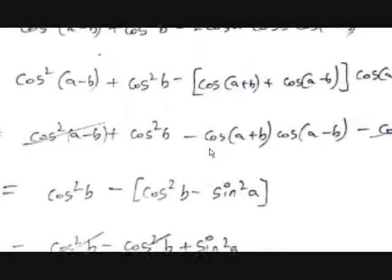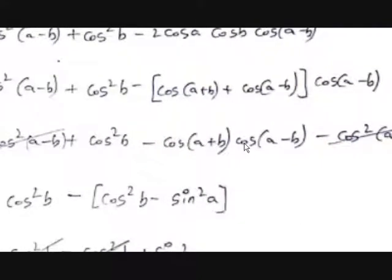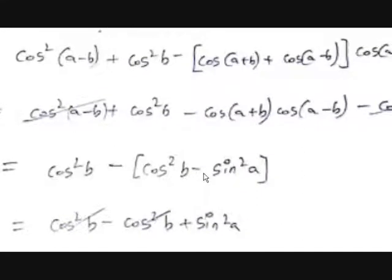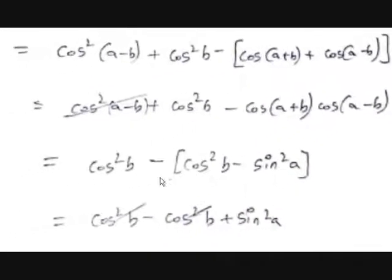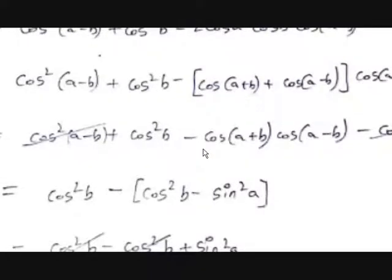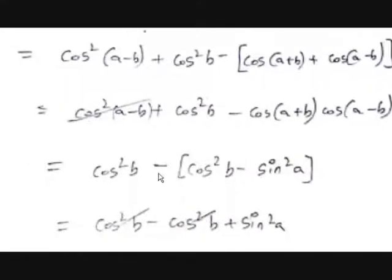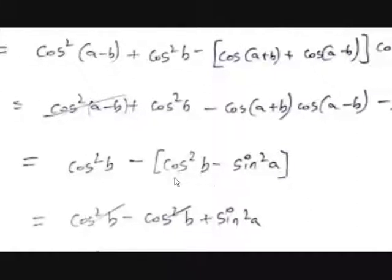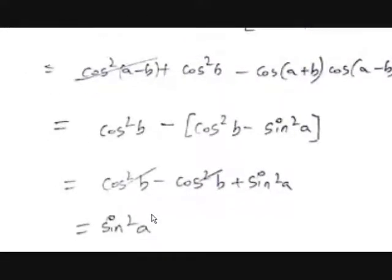We learned the formula for cos(A+B)·cos(A−B) in the previous video — it equals cos²B − sin²A. So substituting: cos²B − (cos²B − sin²A). Multiplying through with the minus sign: cos²B − cos²B + sin²A. The cos²B terms cancel, and you get sin²A. This proves the formula.